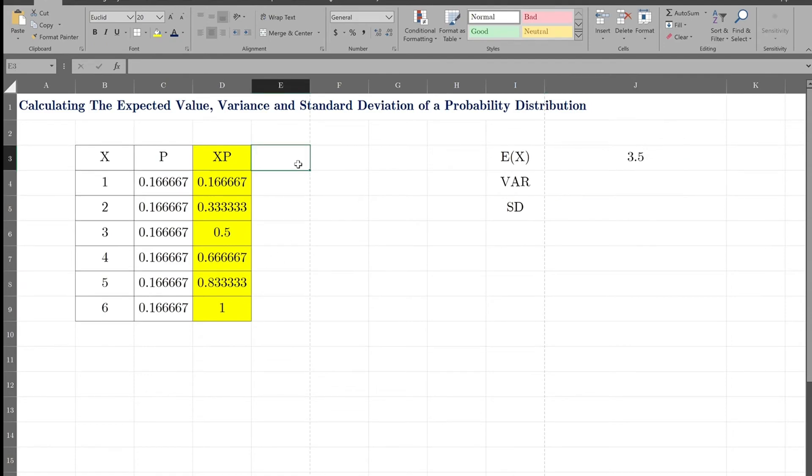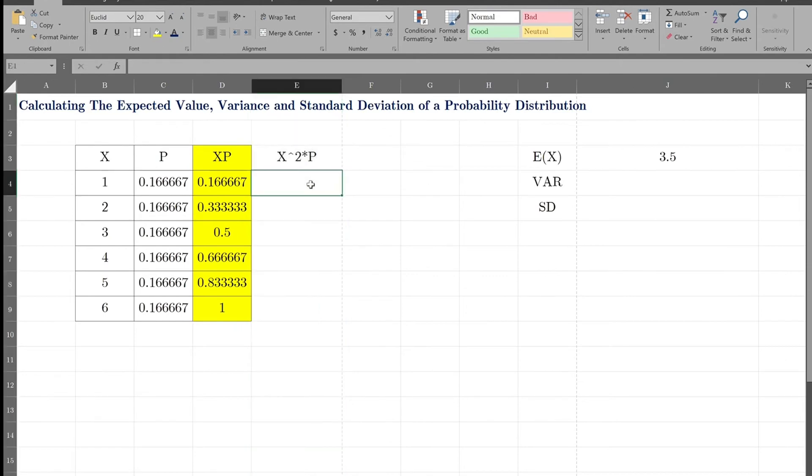In order to calculate the variance, I need to calculate X squared times P. Let me do that. Let me make it a little wider so it'll be easy for me to do it.